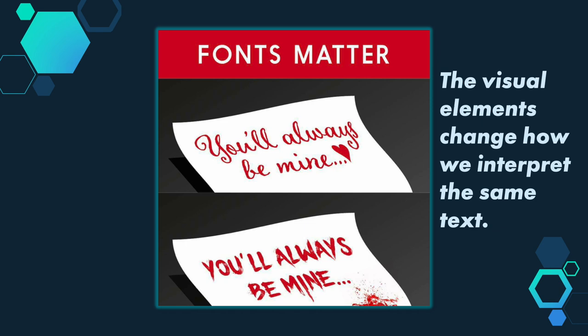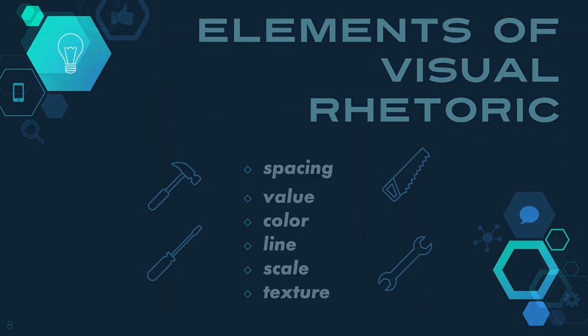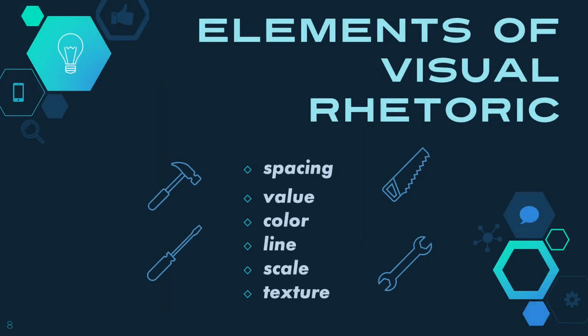Obviously typography can change the meaning of a message, but what are some of the other elements in the visual rhetorical toolbox? The primary elements of visual rhetoric are spacing, value, color, line, scale, and texture.